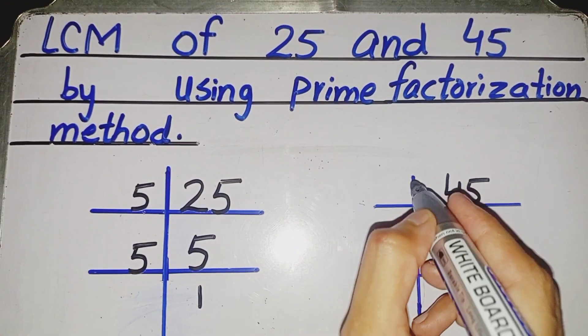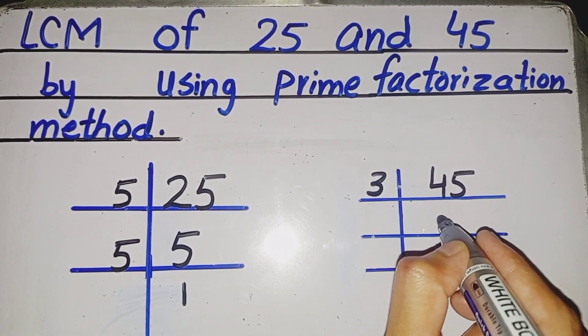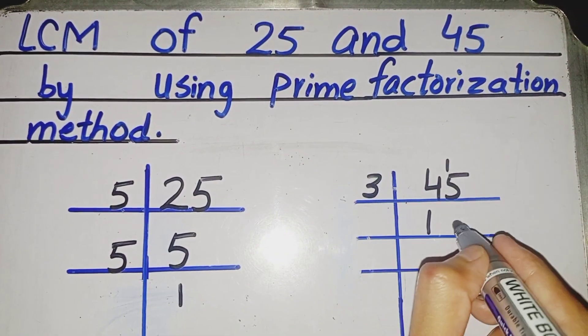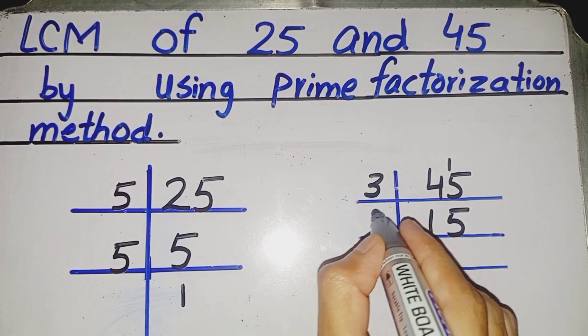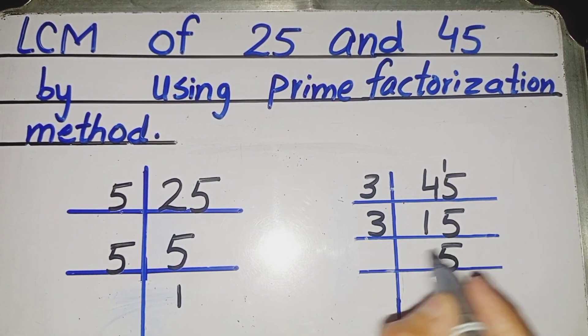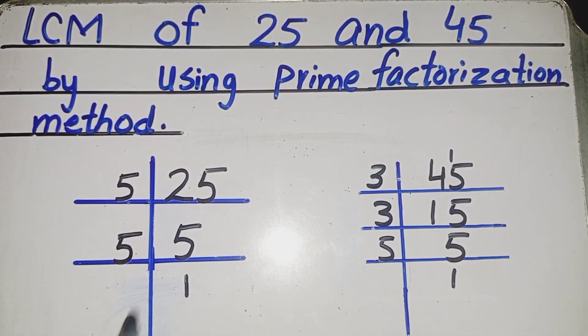For 45: 3 ones are 3, 3 fives are 15, 3 fives are 15, 5 ones are 5.